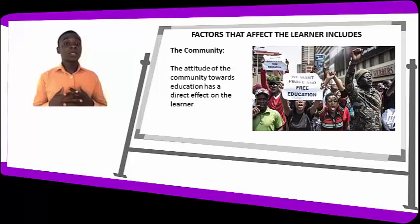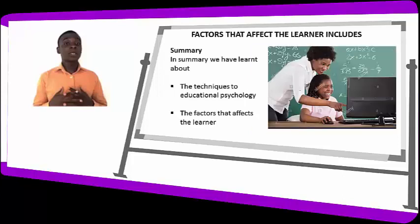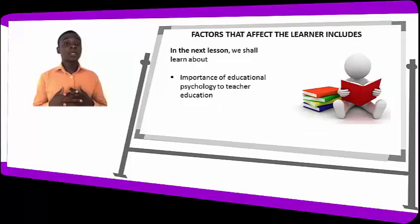In summary, we have learned about the techniques to educational psychology — the learner, the learning situation, and the learning process — and the factors that affect the learners: the teacher, the class setting, the school environment, and the community. In the next lesson we'll be learning about the importance of educational psychology to teacher education.